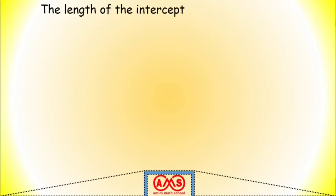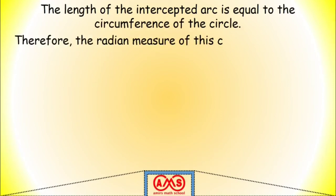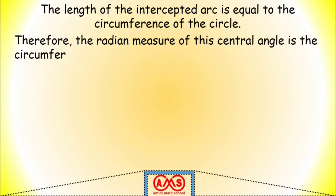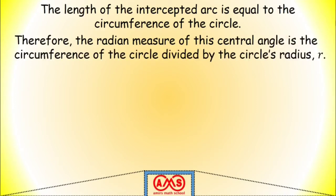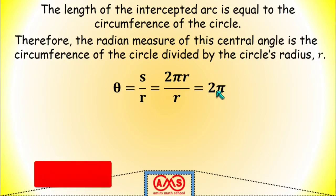In this case, the length of the intercepted arc is equal to the circumference of the circle. Therefore, the radian measurement of this central angle is the circumference of the circle divided by the circle's radius r. That is, θ = s/r, where s is 2πr, divided by r, which gives 2π. That is, the central angle measurement is 2π radians.